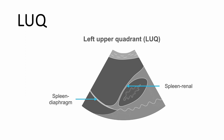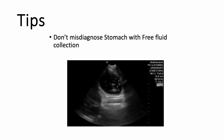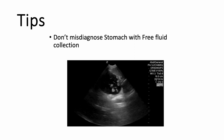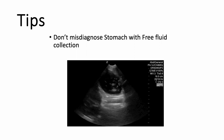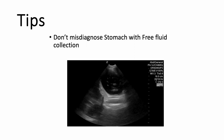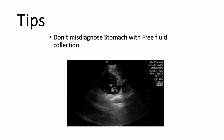For the left upper quadrant, the approach is the same as the right upper quadrant, but to get a better view you need to see the spleen, the left kidney, and the interface between them, and also the diaphragm. When fluid accumulates, it will first collect subdiaphragmatically, then between the spleen and left kidney. A tip: don't misdiagnose the stomach as a free fluid collection — especially in a patient with a full stomach. If you can see the fluid collection inside the stomach it is well-circumscribed, which does not match free fluid.